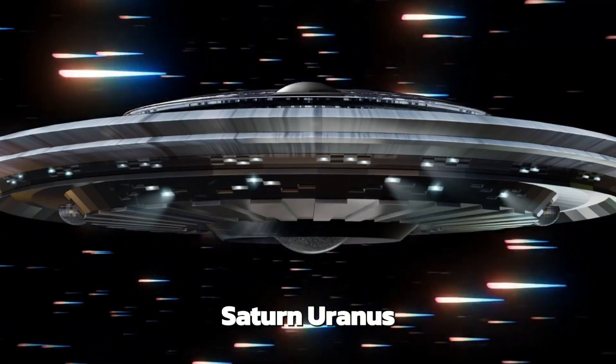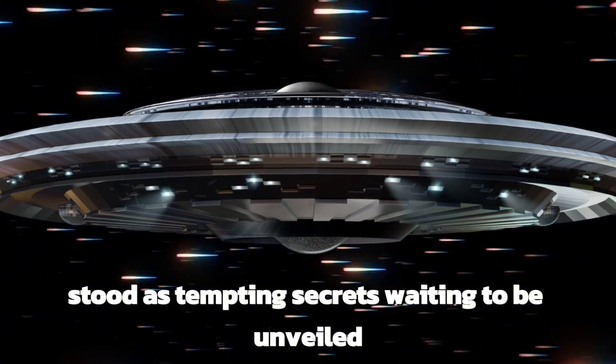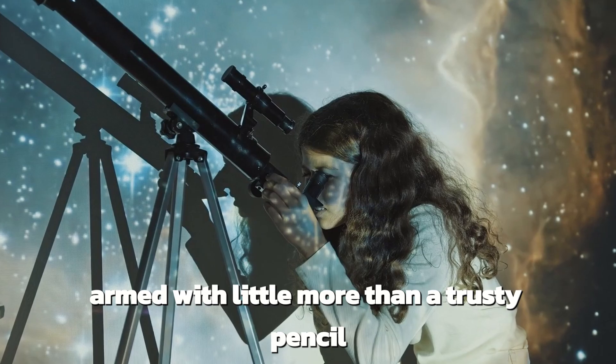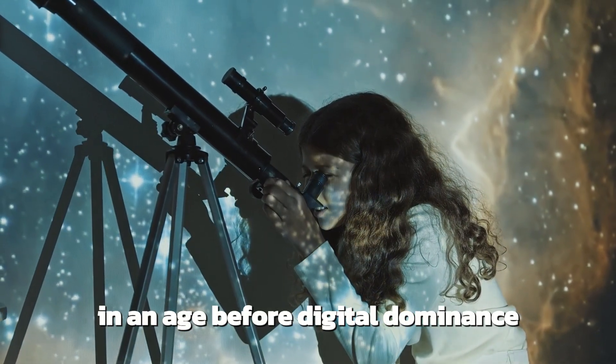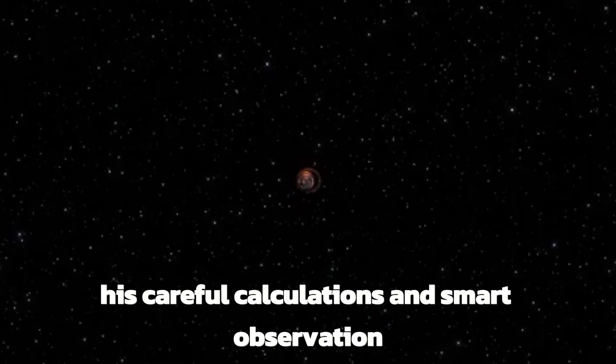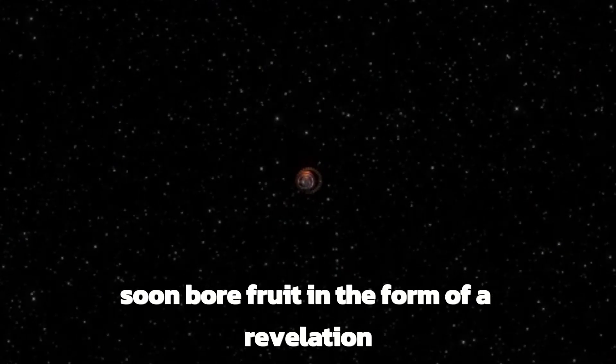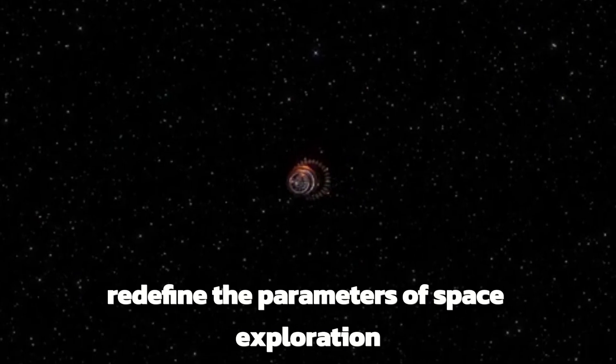The gas giants Jupiter, Saturn, Uranus, and Neptune stood as tempting secrets waiting to be unveiled. Armed with little more than a trusty pencil, a symbol of precision engineering in an age before digital dominance, Flandro embarked on his mission. His careful calculations and smart observation soon bore fruit in the form of a revelation that would redefine the parameters of space exploration.